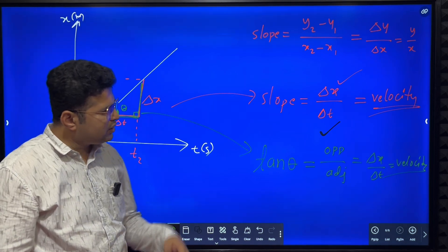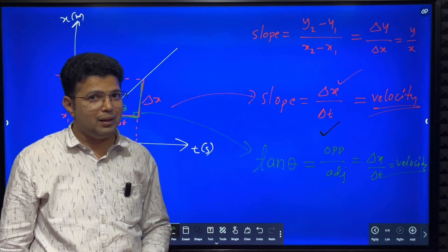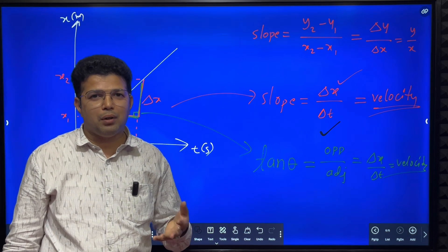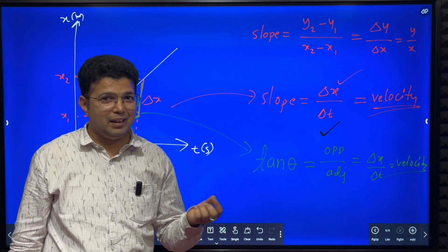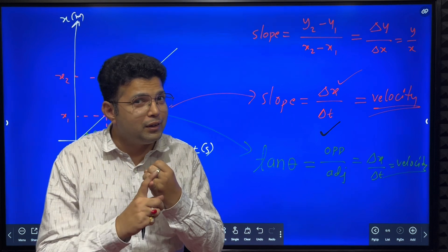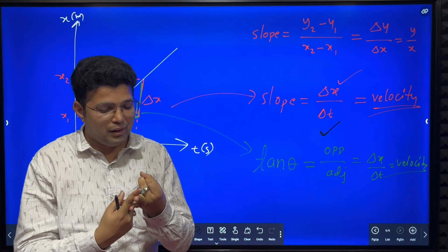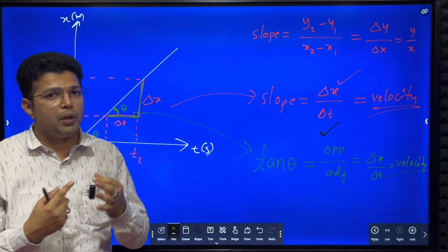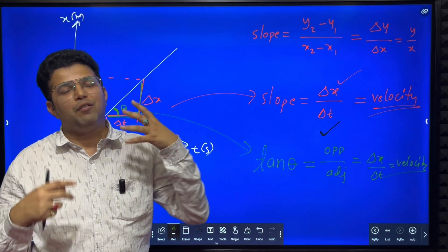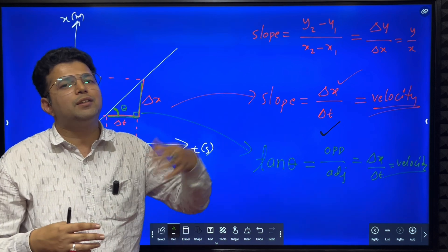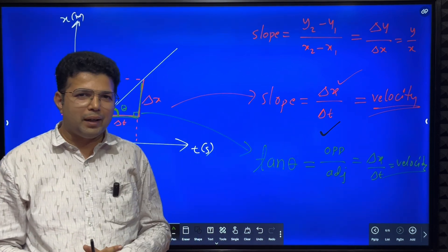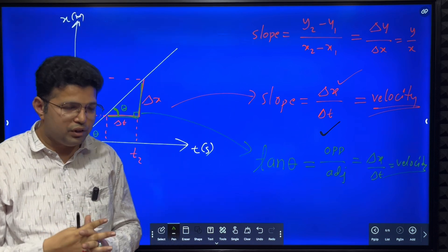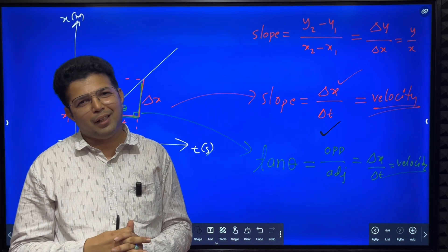In the next session, we are going to study the velocity-time graph in detail and derive kinematic equations: v = u + at, x = ut + ½at², and v² = u² + 2ax. We will also solve problems. Mechanics is very important, so try to listen to the classes with utmost care. Thank you very much.